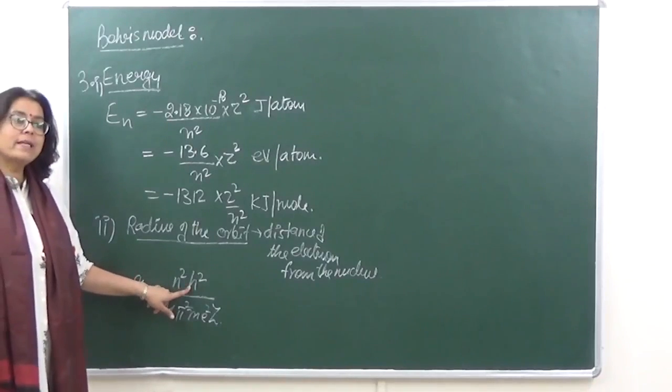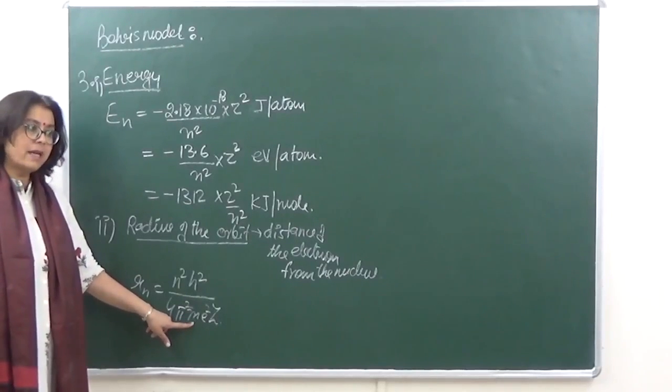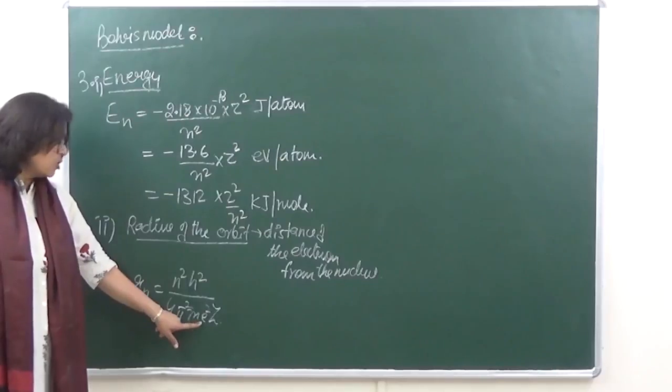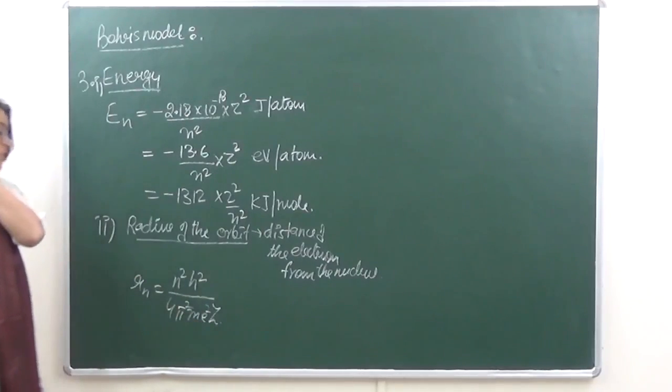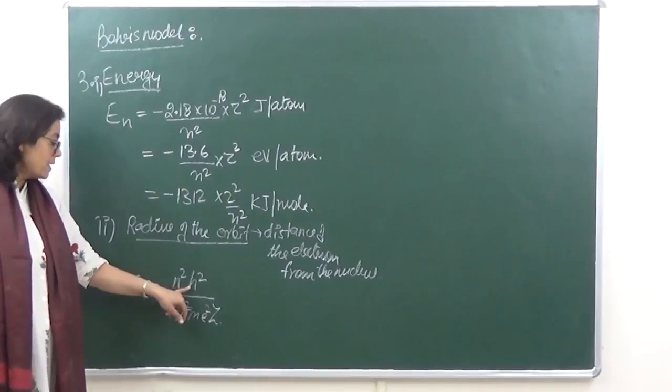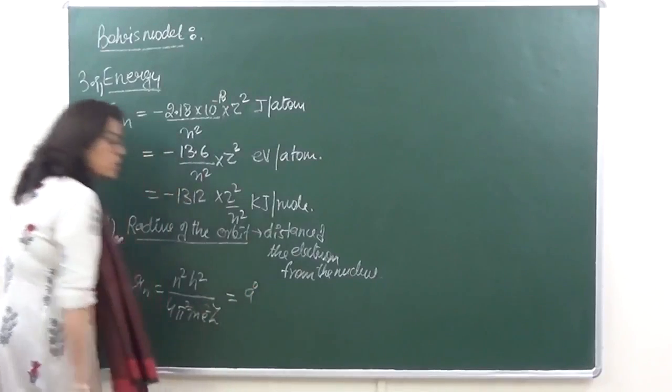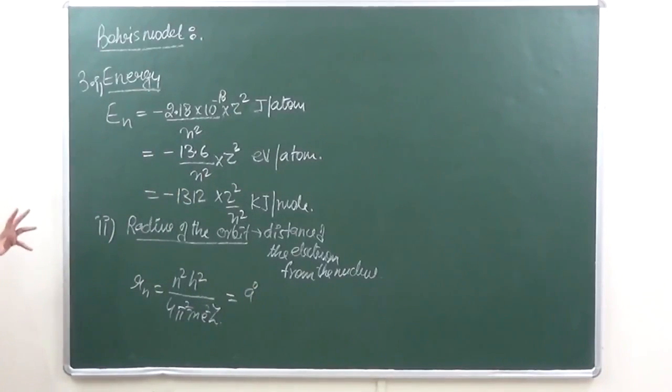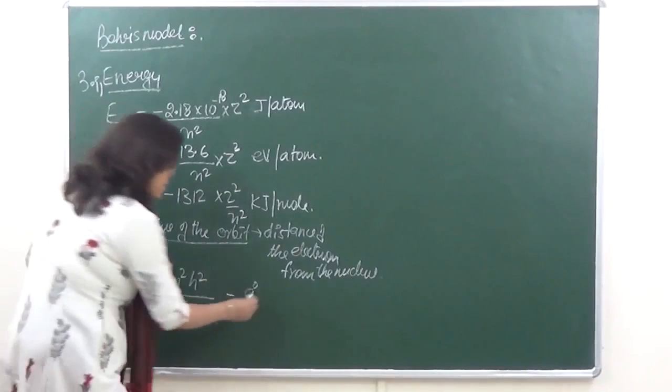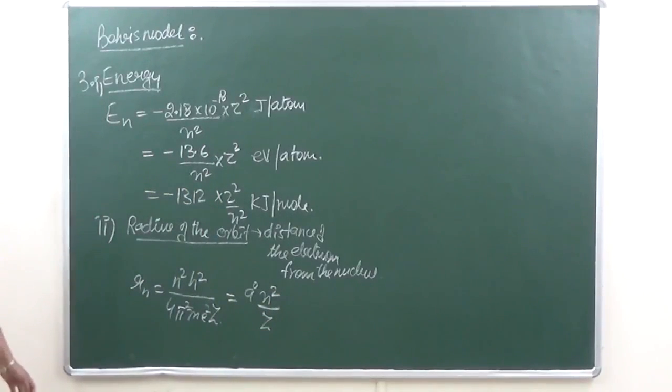Over here, h is a constant, 4 is a constant, pi is a constant, m is the mass of the electron which is again a constant, charge is a constant. Atomic number z is what varies. When we calculate these values, h square 4 pi square m e square - all these constants are given a value which is a naught. So formula becomes a naught n square upon z.